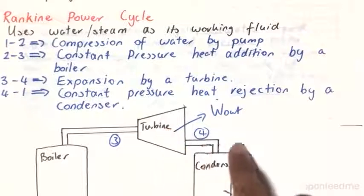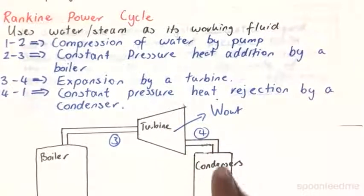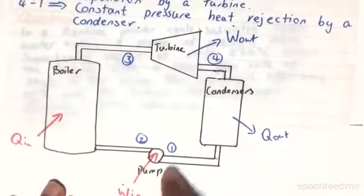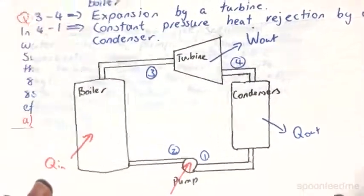And then it will enter the turbine and after the turbine it will enter the condenser. And we are also assuming that the pump and the turbine do not function isentropically.